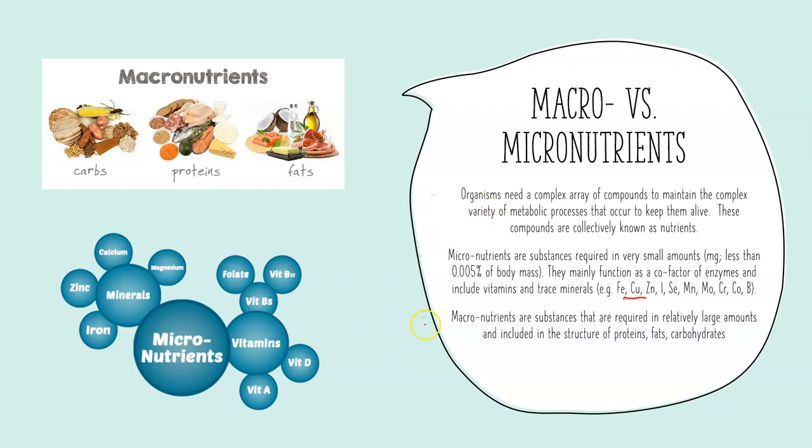The other group is macronutrients, which are required in large amounts. These are proteins, fats, and carbohydrates, which when broken down form the monomers of the biopolymers we've been studying. They also bring with them more micronutrients and minerals — for example, drinking dairy gives us lipids and carbohydrates but also a good amount of calcium.